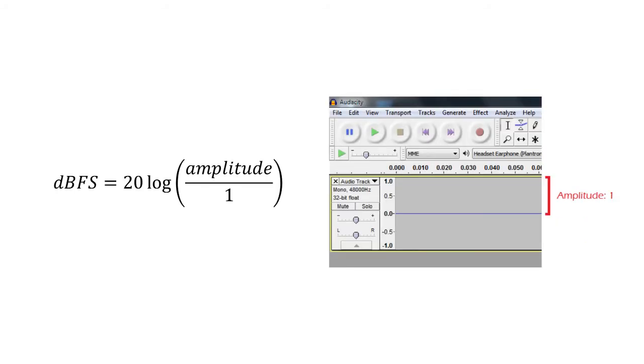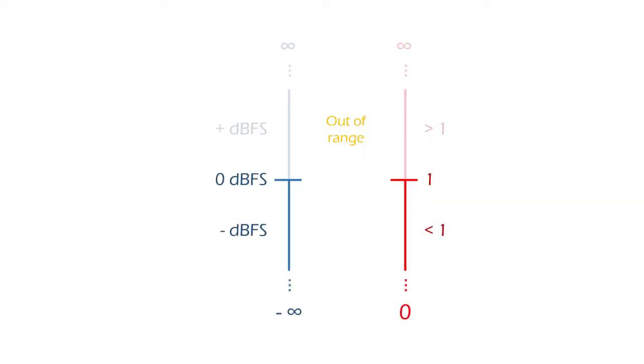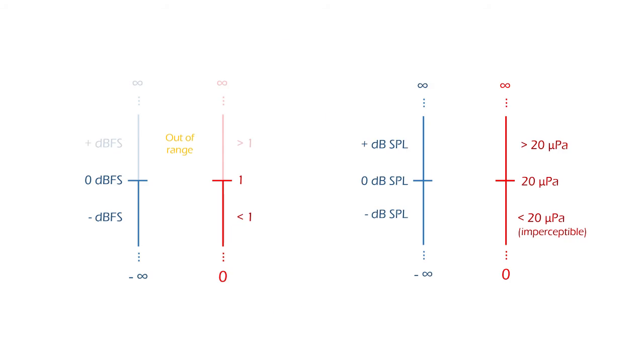Decibels full scale are referenced to the maximum amplitude, which is 1. Since all points' absolute values are lower than 1, their decibels will be negative, due to them being lower than the reference, and the maximum level is 0 decibels. As you can see, this case is the opposite of decibels SPL, where positive decibels are mainly used and 0 decibels was the lower limit.